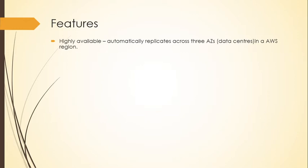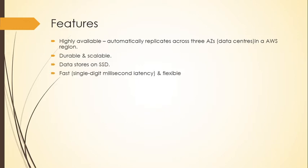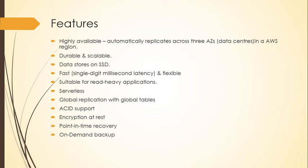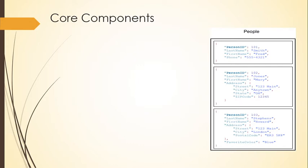Moving on to the features of DynamoDB: it is highly available and automatically replicates data across three availability zones in an AWS region. It is durable and scalable, stores data on SSDs, and is fast and flexible — suitable for read-heavy applications. It is serverless and supports global replication with global tables. It also supports ACID transactions, encryption at rest, point-in-time recovery, and on-demand backup.